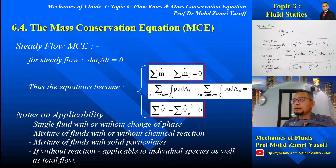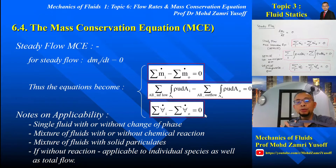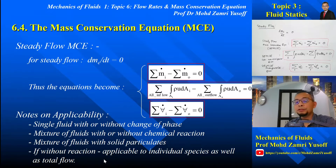In summary, for steady flow the mass flow rate at inlet minus the mass flow rate at outlet equals zero; for incompressible flow the volume flow rate at inlet minus the volume flow rate at outlet equals zero — meaning the rate at which mass flows into the control volume must equal the rate at which mass flows out. This mass equation is applicable for single fluids with or without phase change, mixtures of fluids with or without chemical reactions, and even mixtures of fluid with solid particulate; it applies to individual species as well as the total flow.